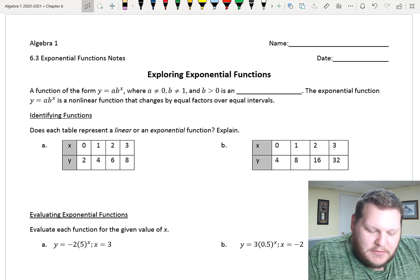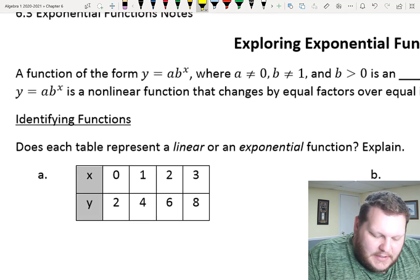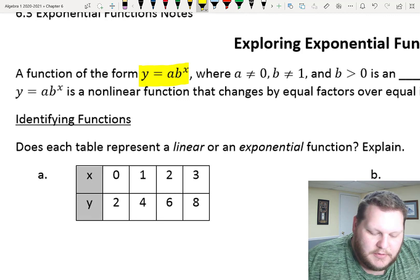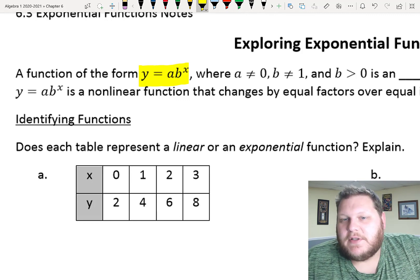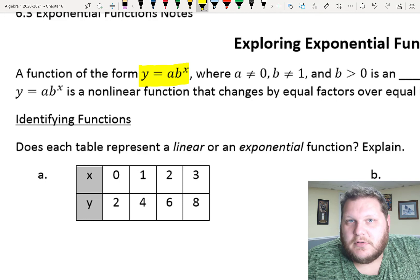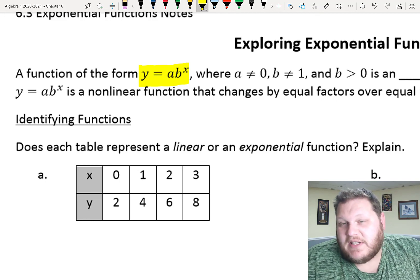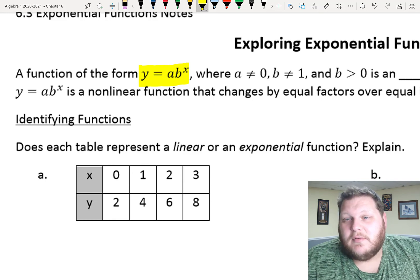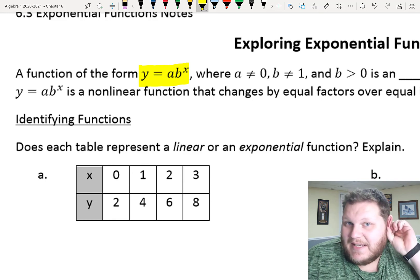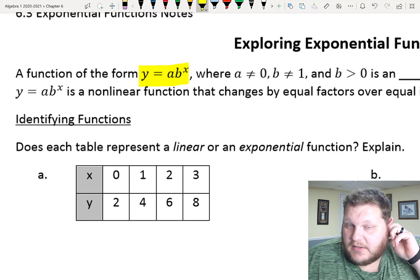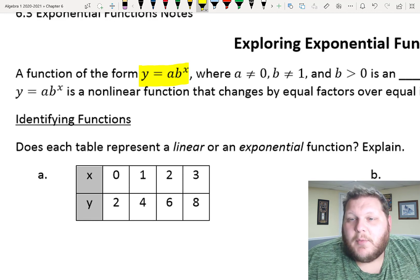An exponential function follows this equation. We've got y equals a times b to the x power, and that's the general form for an exponential. And in that equation, we just have a couple of stipulations, a couple of requirements. We just have to make sure that my a value, that leading coefficient, is not 0, so we make sure that we actually have values.